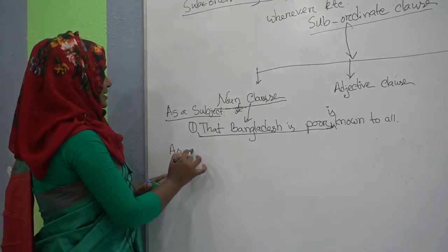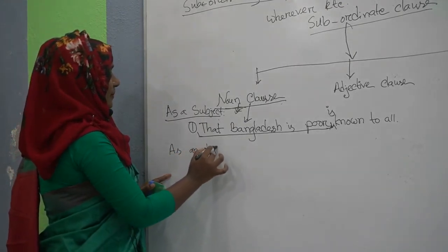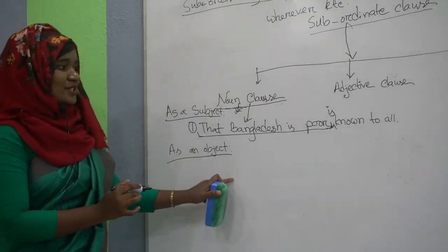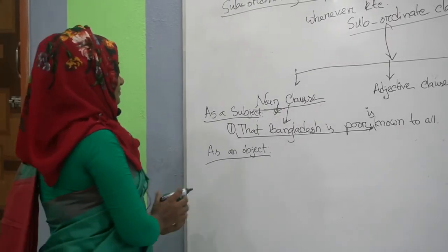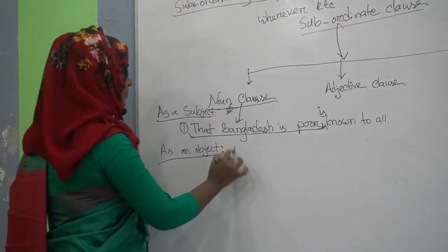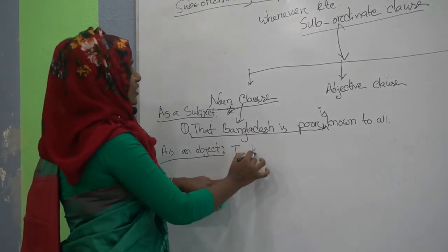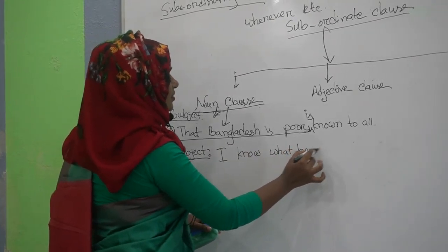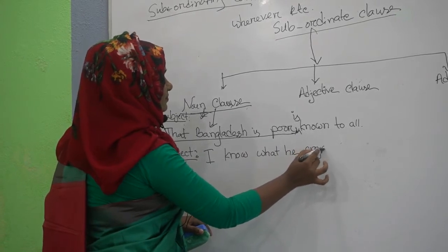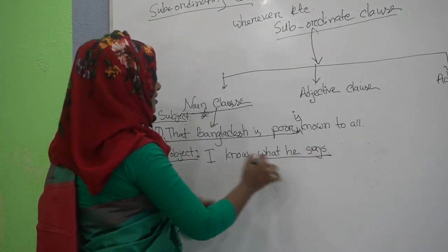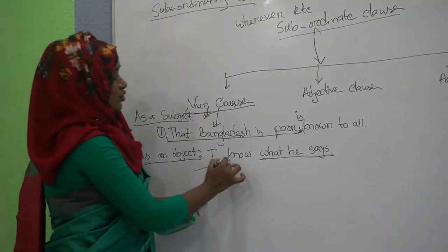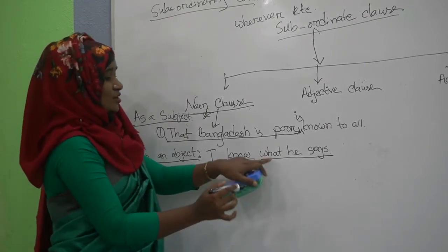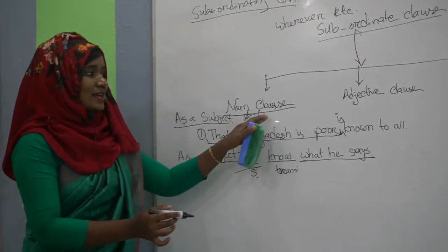Secondly, a Noun Clause can be used as an object in a complex sentence. The example is: 'I know what he says.' Here, 'I' is the subject and 'know' is a transitive verb. 'What he says' is the Noun Clause used as the object.